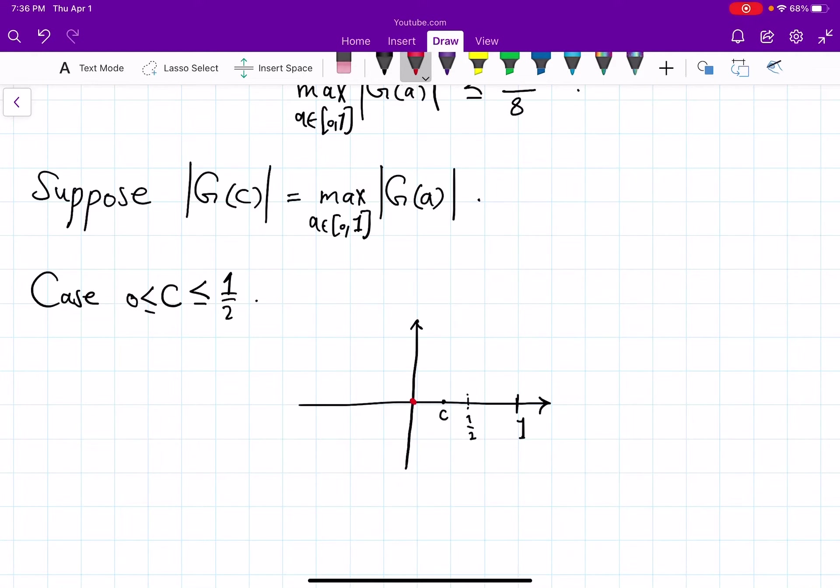and we know that the maximum derivative is 1. So the fastest that the function f can grow is to go slope 1 all the way. And I'm going to cut it off at 1 half so I'm going to consider only here. And the claim is that the function f is inside this triangle.